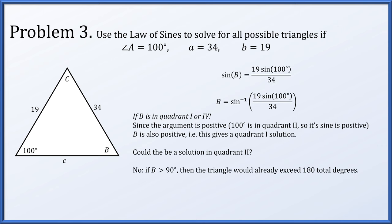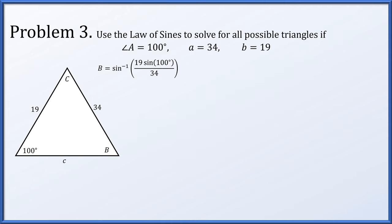However, in this example, it cannot be a quadrant 2 angle. If angle B were larger than 90 degrees, our triangle already has a 100-degree angle A, and if B was larger than 90 degrees, we would already have more than 180 degrees total in the triangle — and that's not how it works. So B cannot be in quadrant 2; it can only be in quadrant 1. So the one we have found is the only possible solution — even though it's not a triangle congruence, there will only be a single solution.